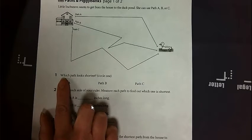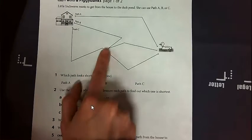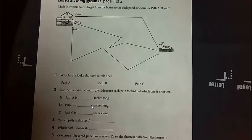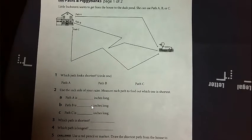Before you get started, you're going to look at number one. Which path looks the shortest? So you're going to look at the three paths and think, hmm, if I was the duck, which path would I choose? Which one do I think is the shortest? You will circle which one you think looks the shortest before you actually find anything there. So go ahead and circle A, B, or C, and then we'll find out here in just a second.